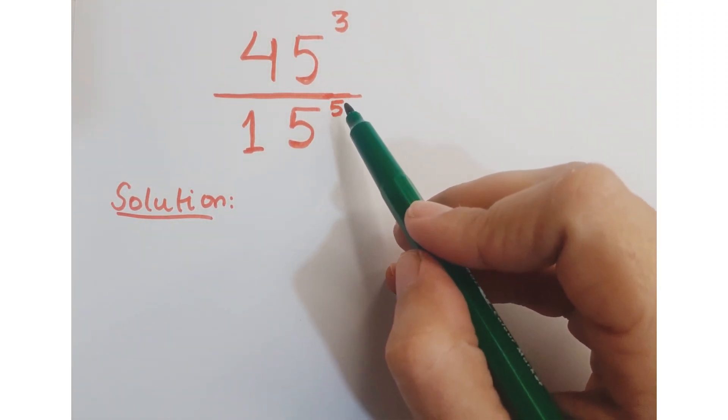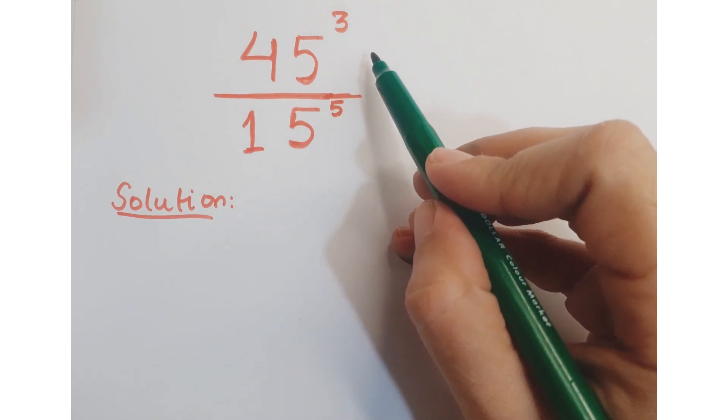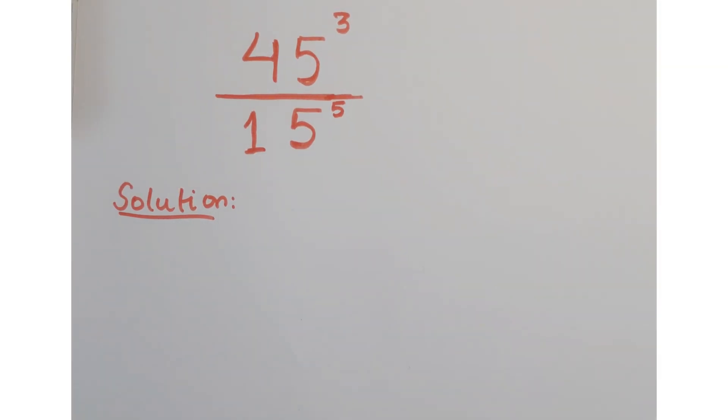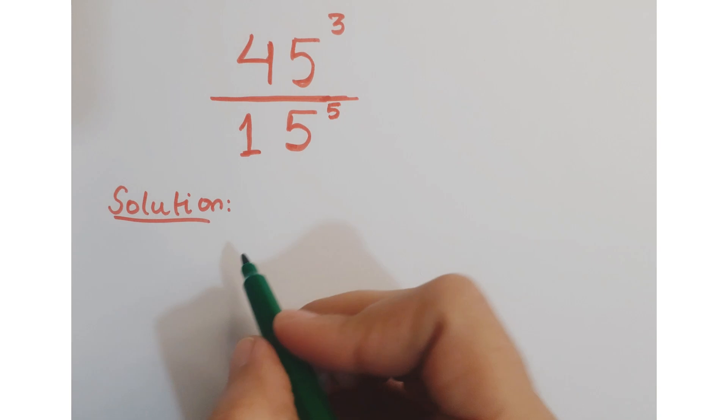Hi guys, look at this question. The question is 45 to the power 3 upon 15 to the power 5 and we have to simplify it.